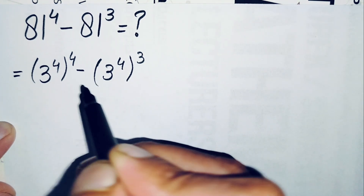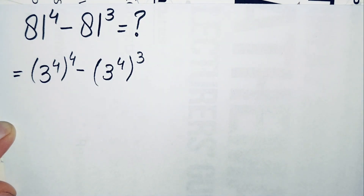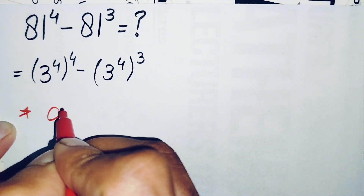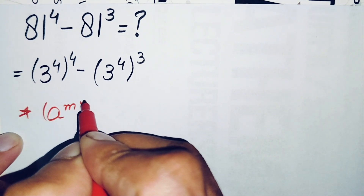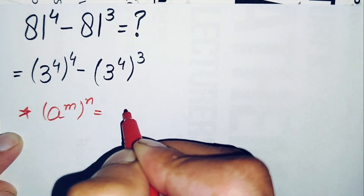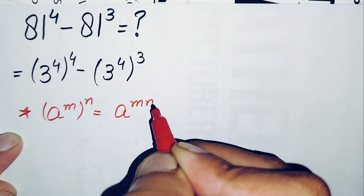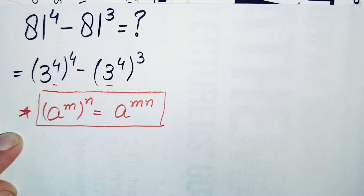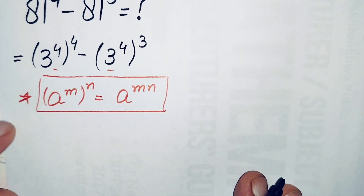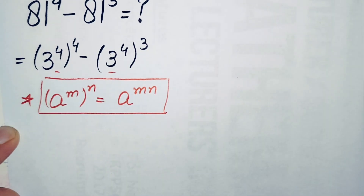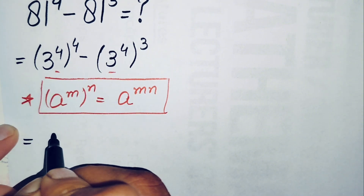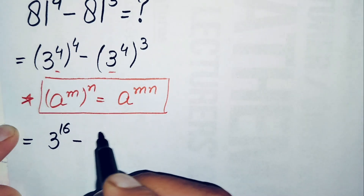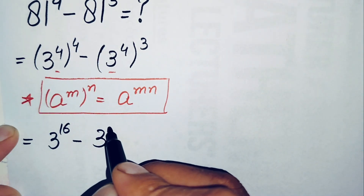In both terms we will use the exponential property that a raised to power m, all raised to power n, equals a raised to power m times n. Applying this, we multiply the powers with each other: the first term becomes 3 raised to power 16 (4×4), and the second becomes 3 raised to power 12 (4×3).